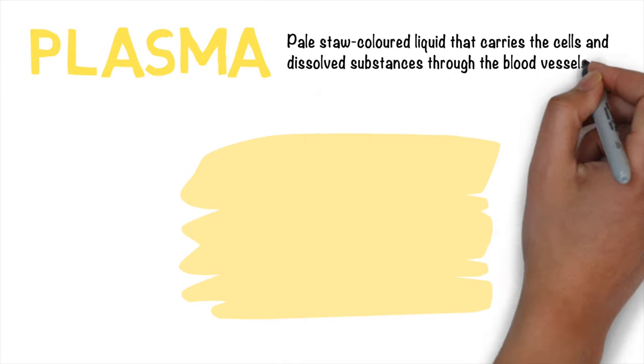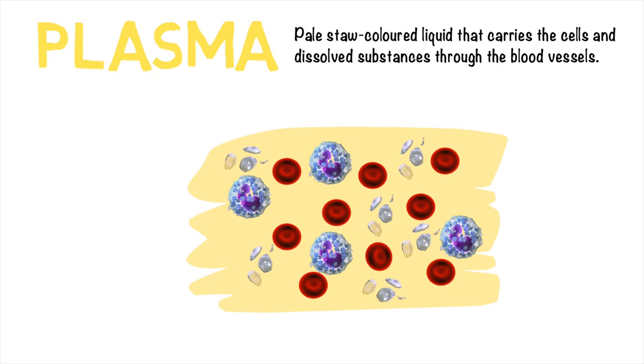And what the plasma basically does is it carries everything inside the blood. So it's a pale straw-colored liquid. It carries the cells and all the dissolved substances. So we've got our red blood cells, our white blood cells, our platelets that get carried by it. And then there are lots of things that dissolve in it, so the glucose and the amino acids we get from our diet that will travel in the blood plasma.